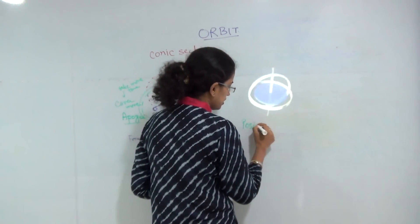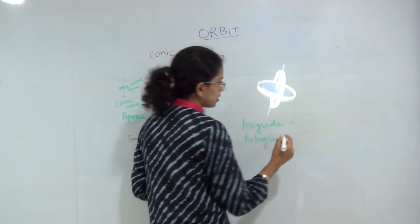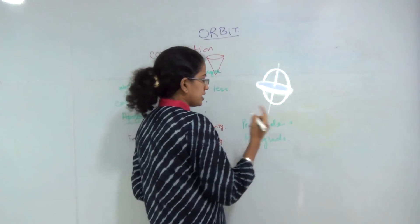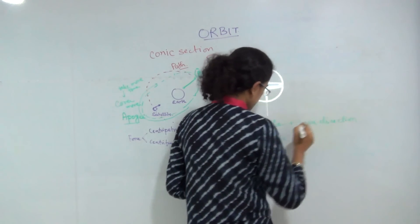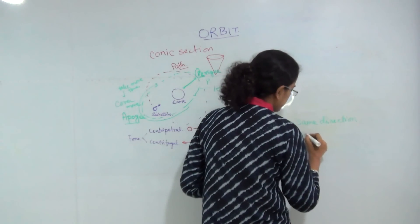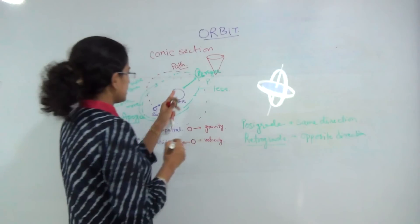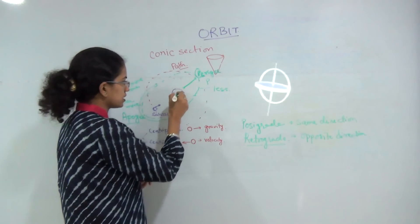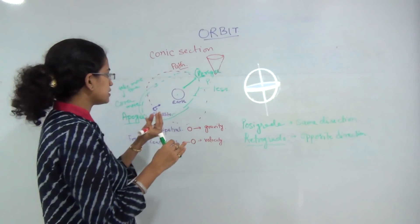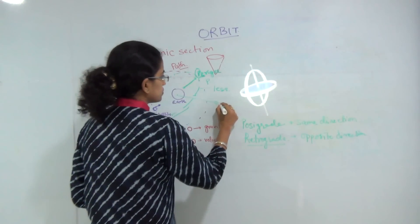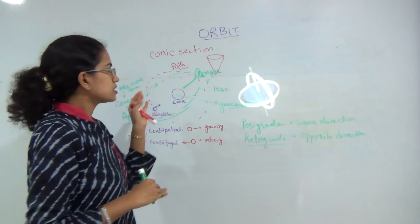Posigrade means the orbit is rotating in the same direction as the rotation of the earth. Retrograde orbits move in the opposite direction to the rotation of the earth. In either case there is a geocenter — the center of gravity. Whenever an orbit follows a path, that orbit has its center of gravity, and the point where the center of gravity lies is known as the geocenter.